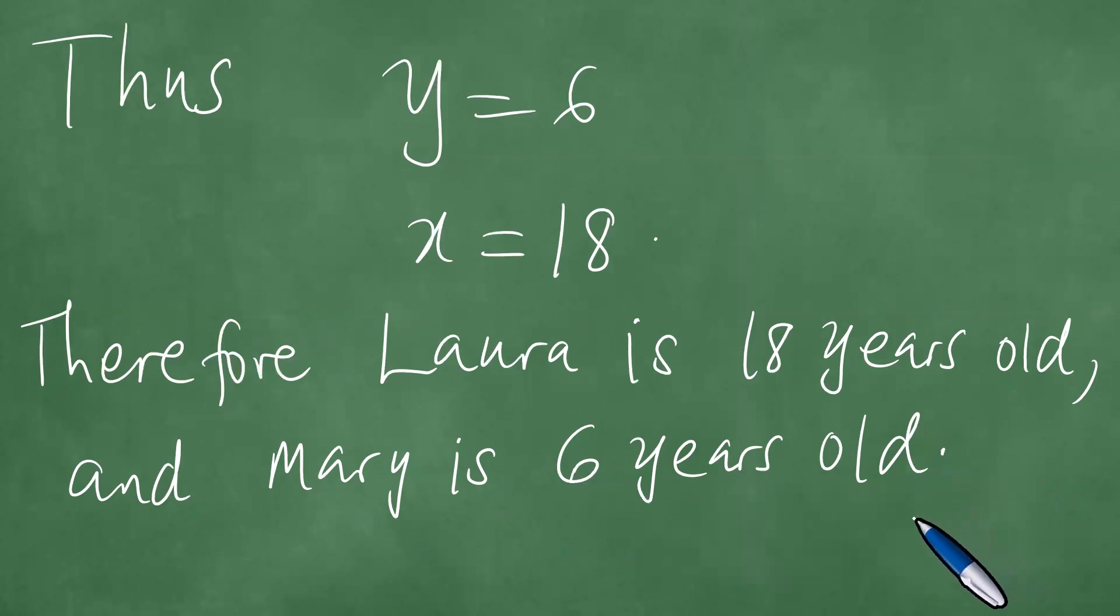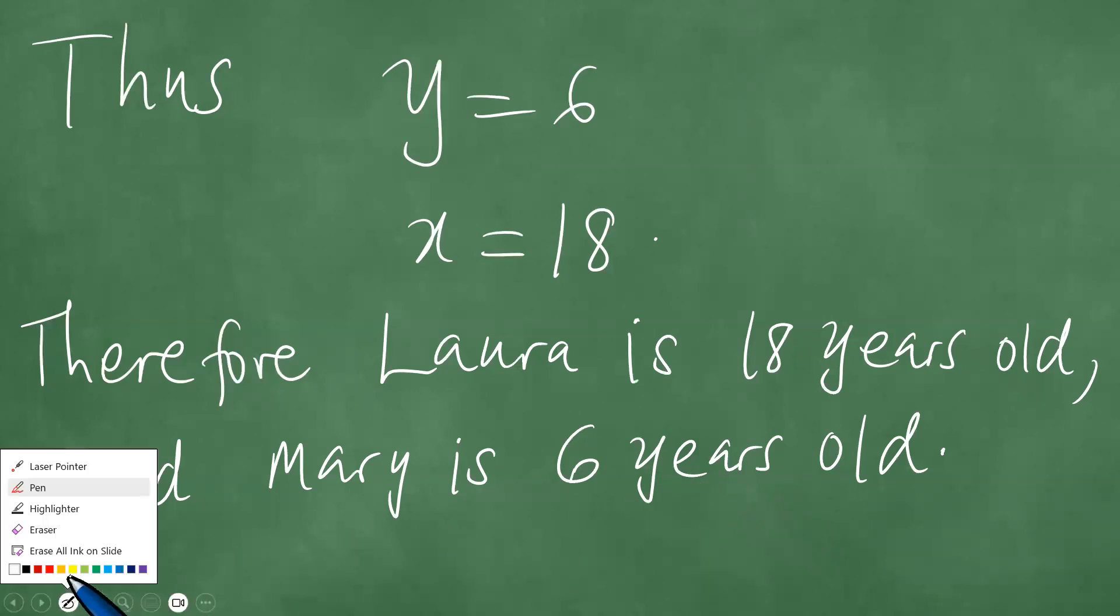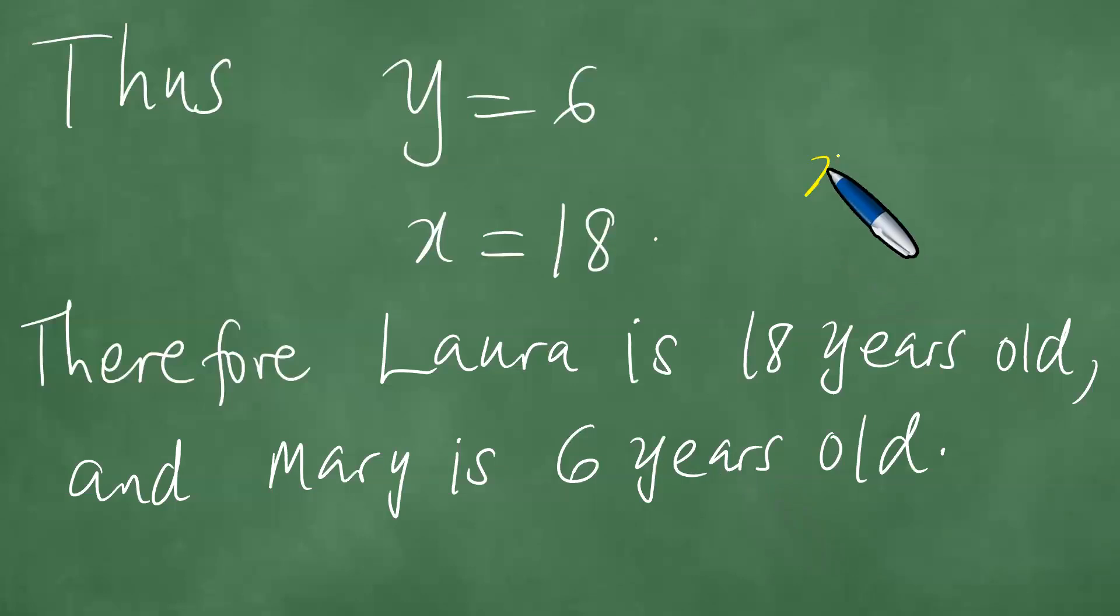And we need to just check, is this true, that these ages are correct? Are these ages correct? Because now we remember one of the equations that said that x is 3y. So indeed, it is true that x equals 3 times y.